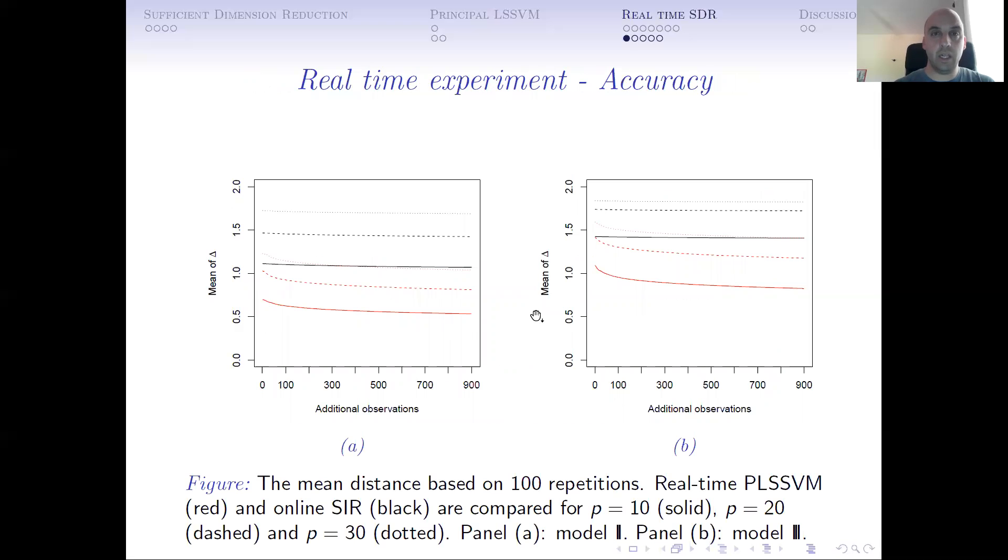As you can see here, this real-time experiment compares the least-square support vector machines with online SIR, the red and black points. We can see that the least-square support vector machine is essentially better. What we do is that we have an initial estimate of 100 data, and then we have 900 new points that we update one by one in both algorithms, although least-square support vector machine can do a batch update, we decided to do it one by one so that we can show these comparisons here. You can see that for p equals 10, 20, and 30, it's always lower for least-square support vector machine than online SIR.